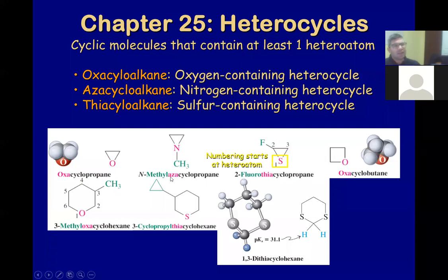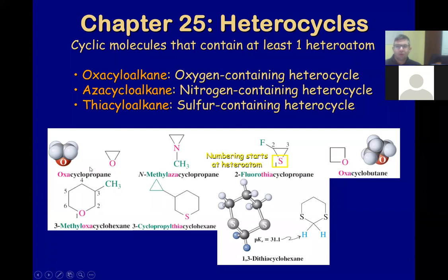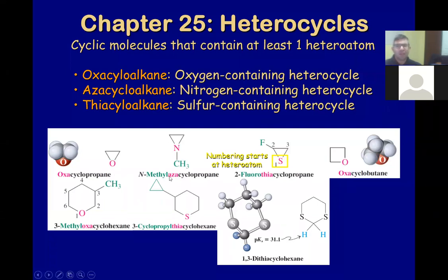These heterocycles are named exactly the same as their carbon counterparts, but you mention whether it's oxygen, sulfur, or nitrogen — oxa, aza, or thia. The priority numbering starts with the heteroatom. For example, trimethyl-oxacyclopropane. For nitrogen, you name it like a normal amine: N-methyl-azacyclopropane — aza because it's nitrogen, and then on the nitrogen there's another methyl group.